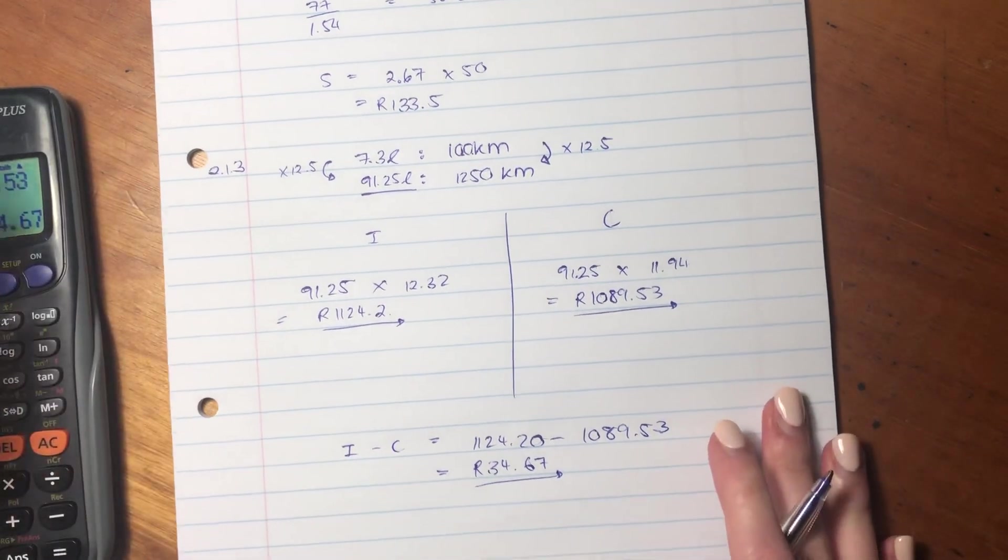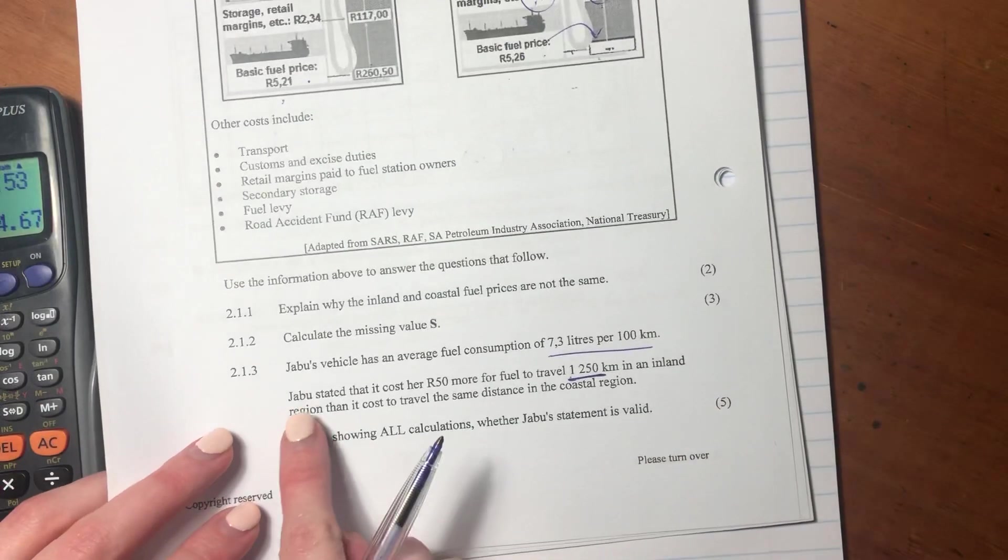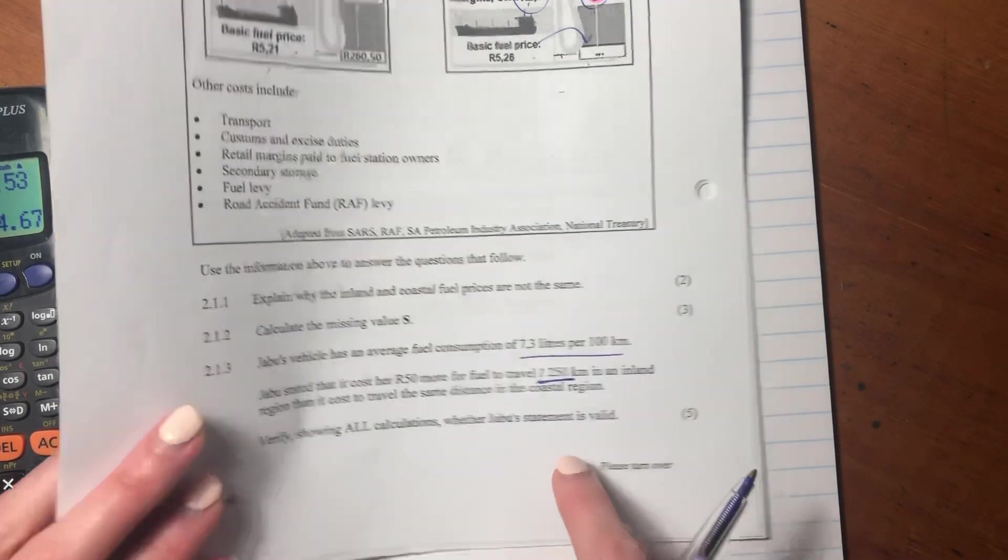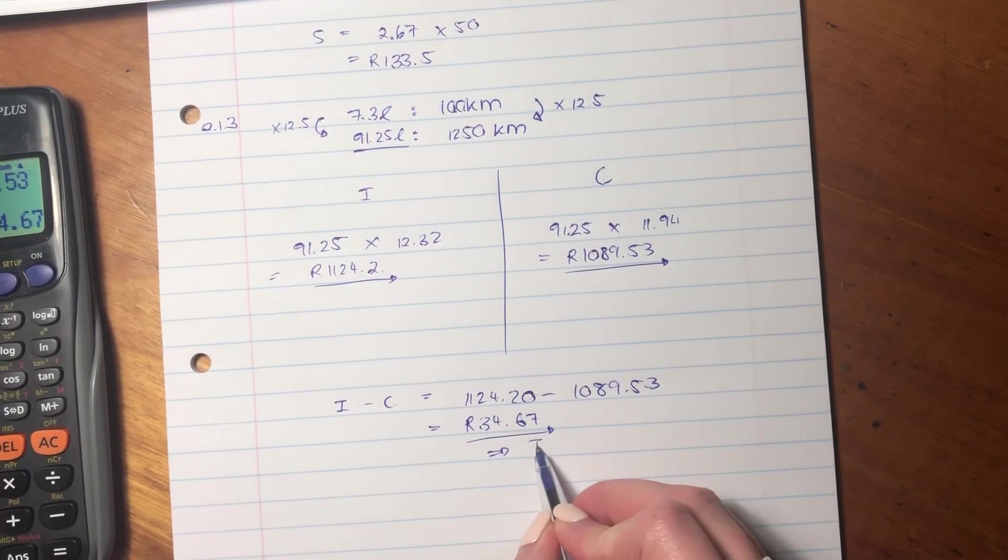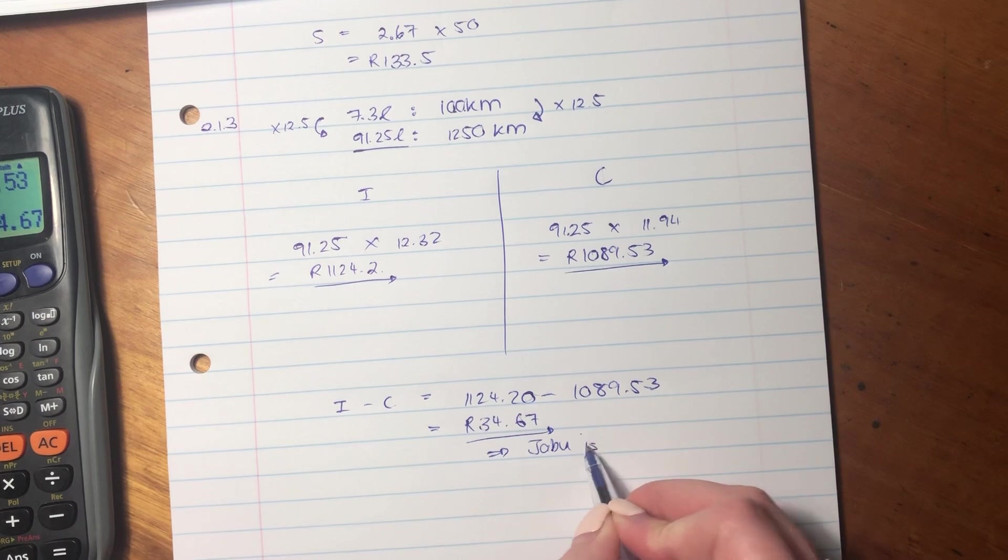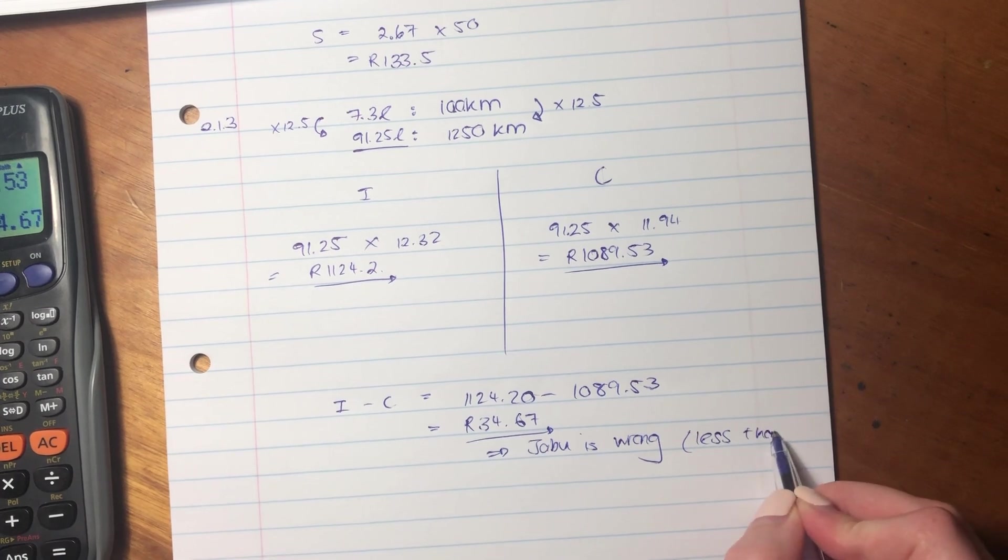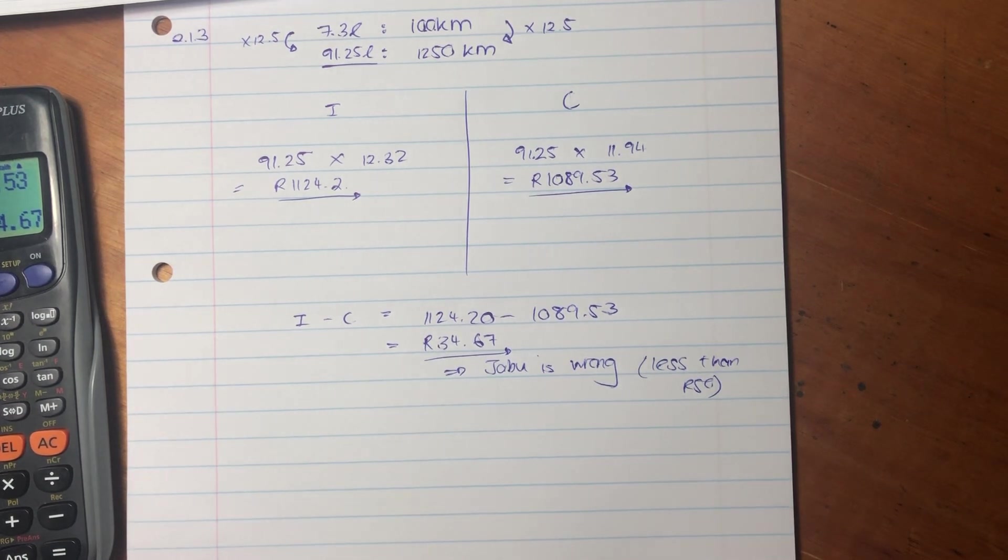Now we've done all the maths, but have we answered the question? The question said, Jabu stated that it cost 250 rand more, and we had to verify whether that statement was true. So we've done the maths, and we say no, Jabu is wrong. She's wrong, because it's less than 50 rand. And there we have answered the question. I hope that was helpful, let's go on to the next one.